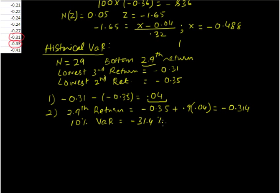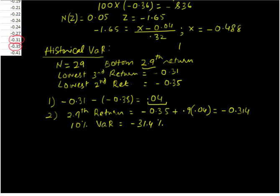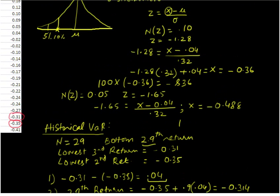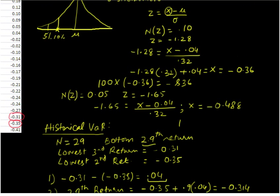This differs slightly from our normal VaR. From the normal VaR we got a 10% VaR of minus 0.36, whereas the historical VaR is minus 31.4%. This indicates that the return distribution is probably not strictly normal.